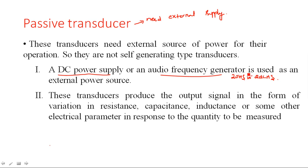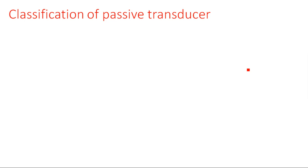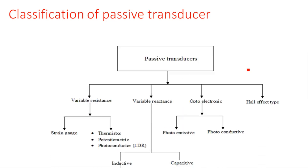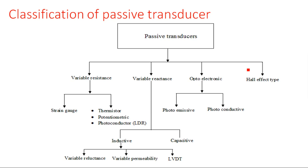Unlike active transducers, passive transducers do not measure voltage or current directly. Instead, they depend on a component — resistance, capacitance, or inductance. Variations in resistance, capacitance, or inductance values are used to measure the physical quantity. Without these parameters, passive transducer changes cannot be measured. Passive transducers are classified as: variable resistor, variable reactance, optoelectric, and Hall effect types.